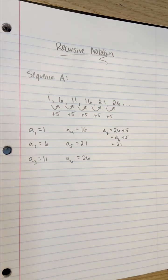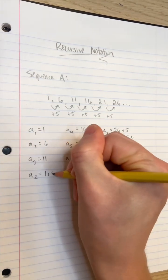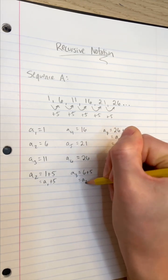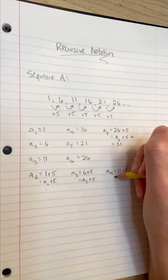In fact, to find A sub 2, we added 5 to A sub 1. To find A sub 3, we added 5 to A sub 2. To find A sub 4, we added 5 to A sub 3, and so on.